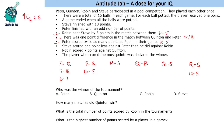Steve scored one point less against Peter than he did against Robin. Against Robin, Steve scored 5, so against Peter, Steve scored 4, meaning Peter scored 11. Peter's score in two games is 11 and 10, totalling 21. Since Peter finished with an odd number of points, the Quinton-Peter score must be 8-7, making Peter's total 29 points.